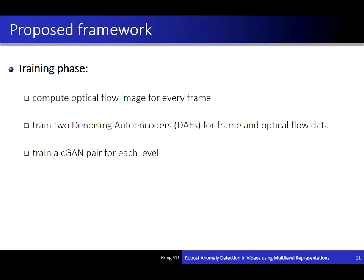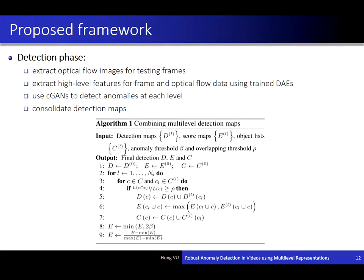At each level of representation, we train a pair of cGANs to generate the optical flow image from the frame image and to generate the frame image from the optical flow image. For the detection phase, given a testing video, we extract the optical flow image for every testing frame.